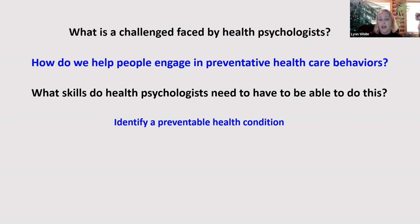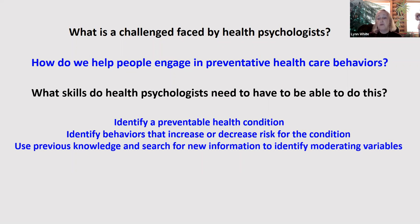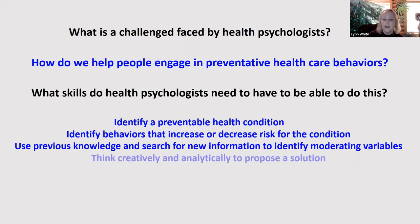I need to be able to identify a preventable health condition, of which there are many. I need to identify behaviors that will either increase or decrease the risk for that condition. I need to bring in my own previous knowledge — the facts I can remember — search for new facts and information to identify variables that play into the risk level or behavior related to the condition. And then the really wicked part: I need to think creatively and analytically to propose a solution.